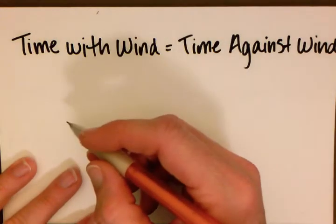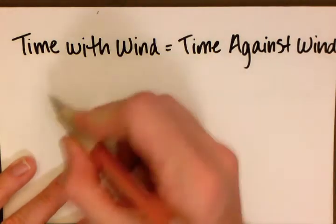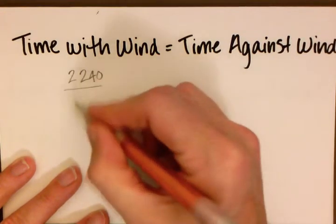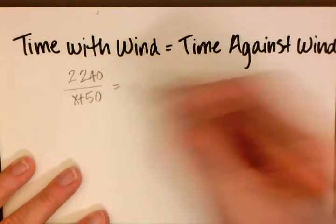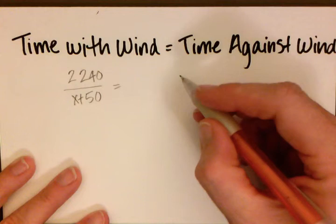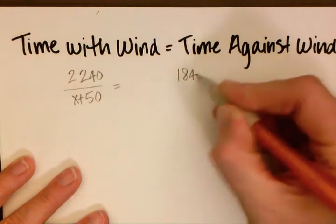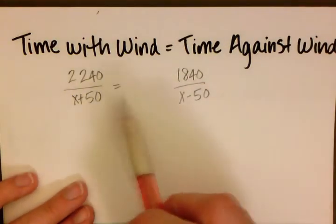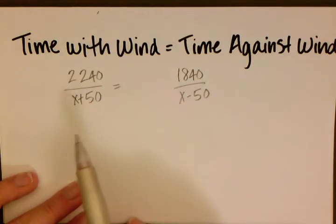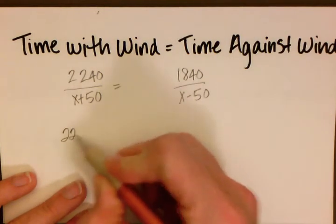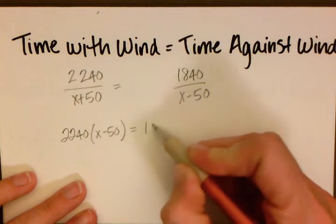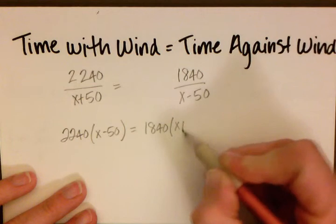So we take what we got from our table. Time with the wind was 2,240 divided by x plus 50. That equals time against the wind, which is 1,840 over x minus 50.